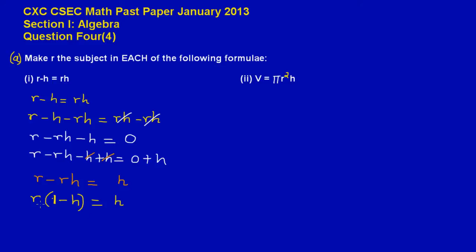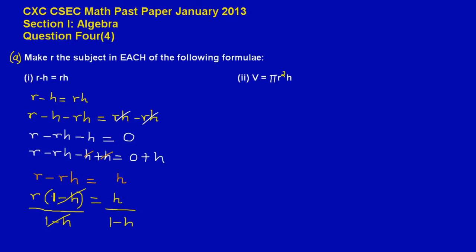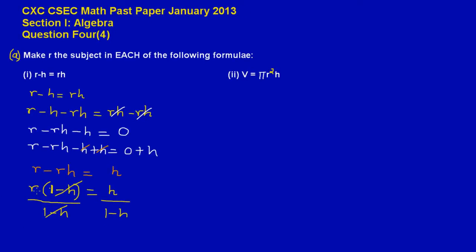Now this is easy from here. If you notice, 1 minus H is multiplying R. To make R the subject I need to do the opposite of multiplication, which is to divide through by 1 minus H. What I do to one side of my equation I have to do to the other side, so I divide both sides by 1 minus H. This cancels out, and therefore R is equal to H upon 1 minus H. That is our answer — it's pretty much that easy.